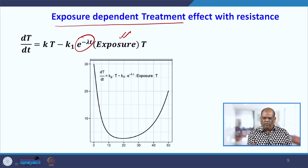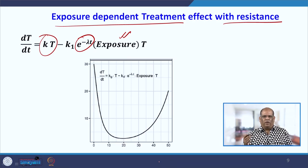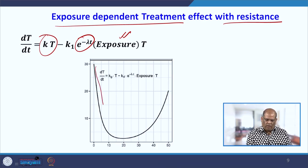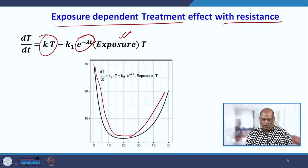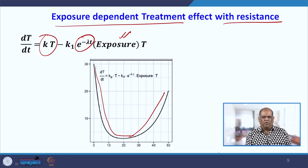This is an exposure-dependent treatment model but with resistance. A person has exponential tumor growth, a drug is given, but with time the efficacy of the drug fades. You see the tumor going down, but once the drug effect wears off the tumor relapses — a very well-known scenario that happens in many patients. With that we have covered many models giving an idea of tumor cell growth and the corresponding effect of drugs.